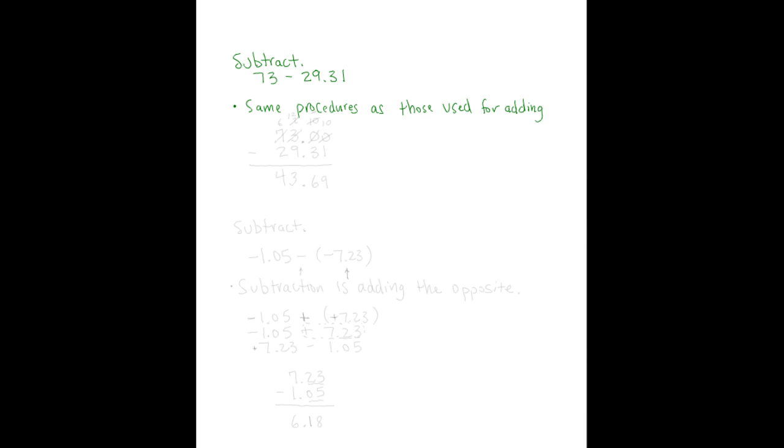Now with subtraction, order matters. So we have to put the first number first, that one will go on top, and then the second number beneath it. 73 does not have a decimal point, but we know that we can add one to the right of the 3. So we've got 73, and we want to subtract 29.31. Remember, with addition and subtraction, you always line up the decimal points. We need some placeholder zeros above the 3 and the 1, so we'll add both of those, and now we can draw our line and subtract.